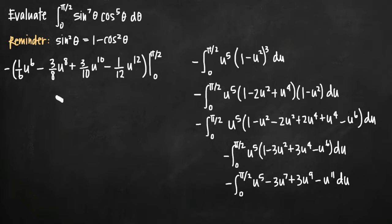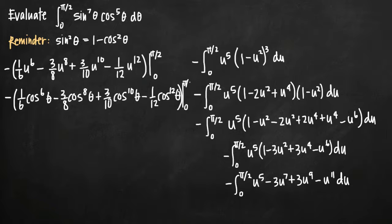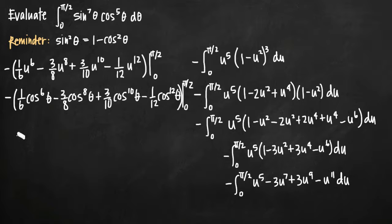Before we do that, we need to make a back substitution for u. Remember that we set u equal to cosine of theta, so we substitute cosine of theta everywhere we have u. Now to evaluate this definite integral we plug in the upper limit of integration, pi over 2. Cosine of pi over 2 is 0, and 0 raised to the sixth, eighth, tenth, or twelfth power is still 0. So when we plug in pi over 2, we get 0 minus 0 plus 0 minus 0.